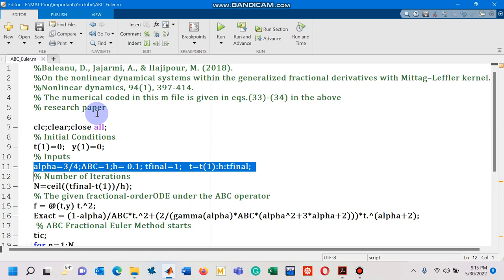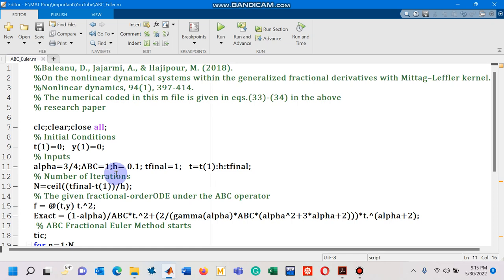Line number 11, couple of inputs required. Alpha, that I have arbitrarily chosen to be 3 by 4. ABC, this is normalization factor taken to be 1 in the research paper. Step size is 0.1. The final mesh point I have chosen 1 and the integration interval is given by T.